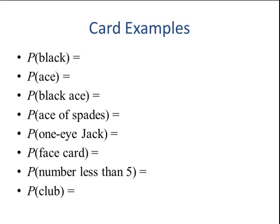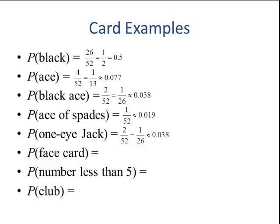Let's look at some card examples. If we take the event drawing one card from a standard deck of 52 cards, what is the probability that the card will be black? We don't have to perform the experiment. We know that there's 26 black out of 52 cards and that reduces to 1 half. If we look at the number of aces, there are 4 aces. So 4 out of 52 reduces to 1 out of 13 or 0.077. The probability of a black ace, that can happen two ways: ace of spades and ace of clubs. So that reduces to 1 out of 26. Ace of spades, there's only 1 ace of spades. So that's 1 out of 52. One-eyed jack, there's 2. So that's 2 out of 52. Face card is a jack, queen, or king. Each suit has 3. So 3 times 4 suits is 12. 12 out of 52 reduces to 3 out of 13.